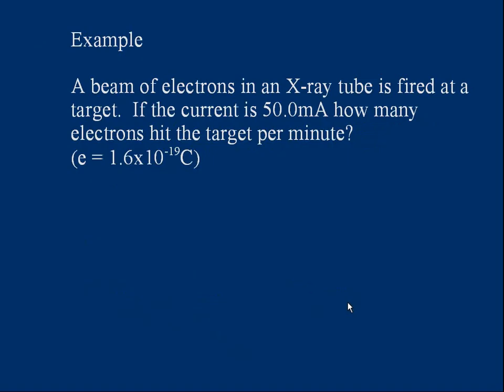Try a different one. In an X-ray tube, which produces X-rays, a beam of electrons is fired through a vacuum and hits a tungsten target. And when the electrons slow down, they produce X-rays. In this example, we've got a current of 50.0 milliamps flowing through an X-ray tube. And the question is, how many electrons are actually hitting the target each minute? And as a reminder, the elementary charge is 1.6 times 10 to the minus 19 coulombs. So if you want to pause the video, read the question, have a go for yourself.